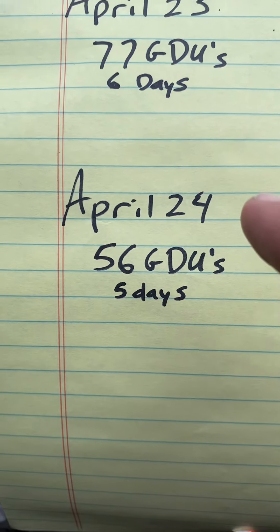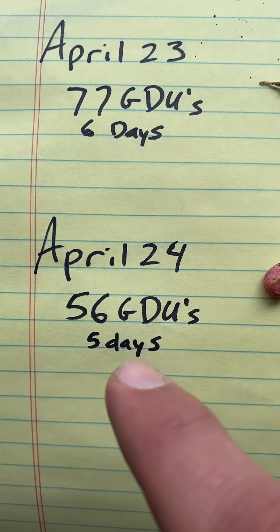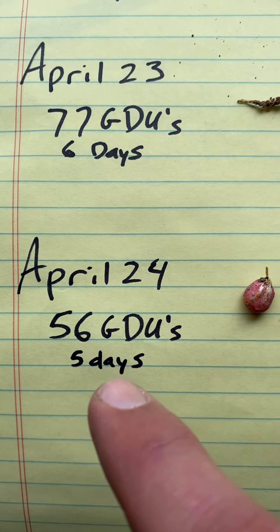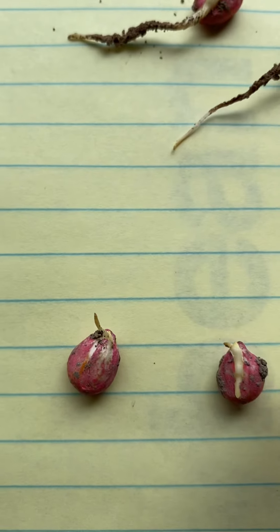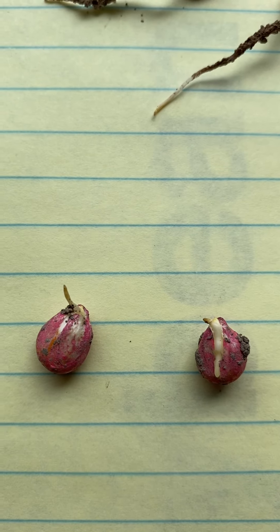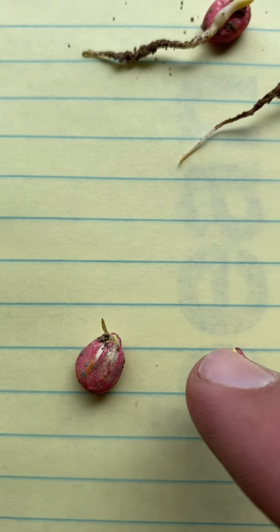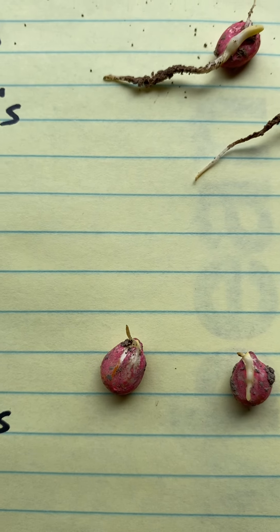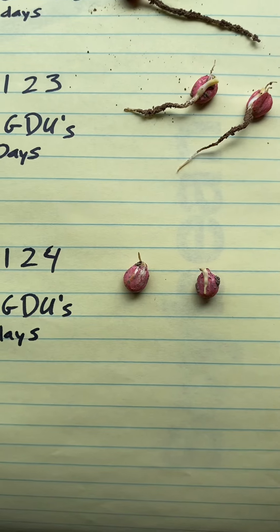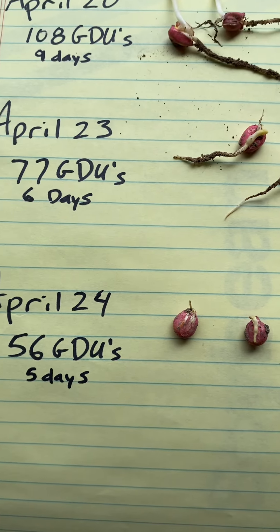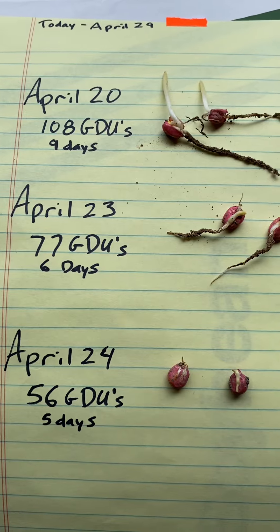The last one I'll show you is the April 24th field — just one day's difference. It has 56 GDUs and has been on the ground for five days. We can just barely see the seminal root coming out from the seed. When we see this, you're about halfway to emergence. Depending on the weather — if it's 80 degrees, that could be two more days until it's up and out of the ground. If highs are in the 50s, it could be 10 to 20 more days.